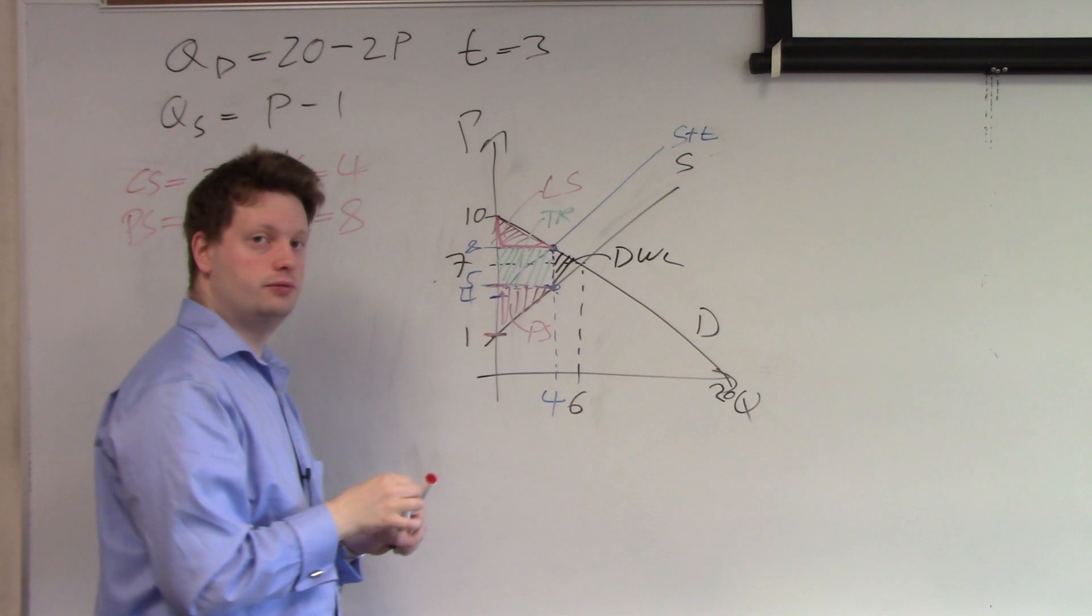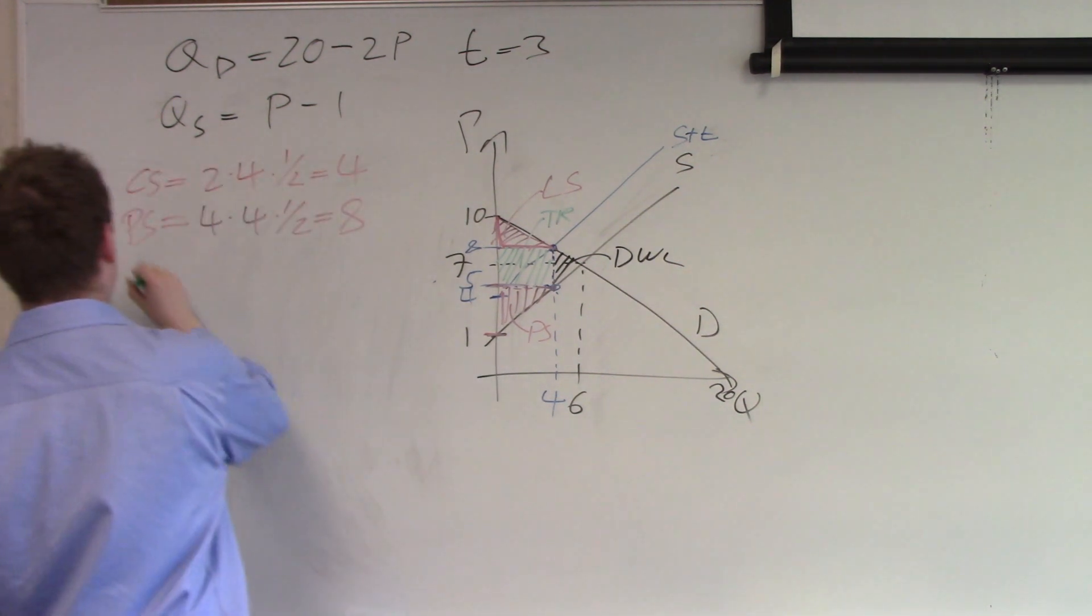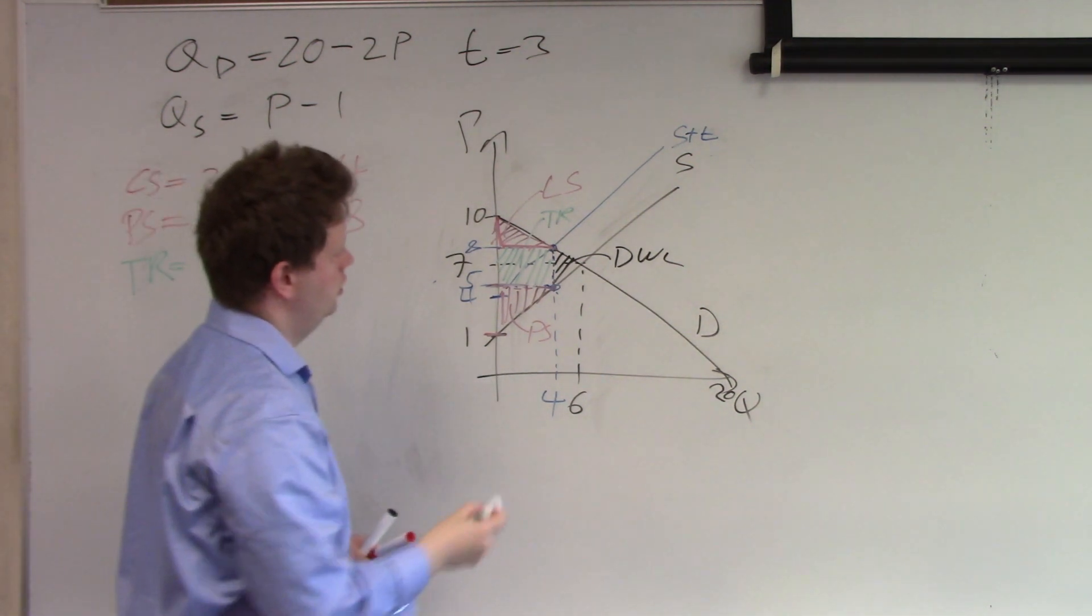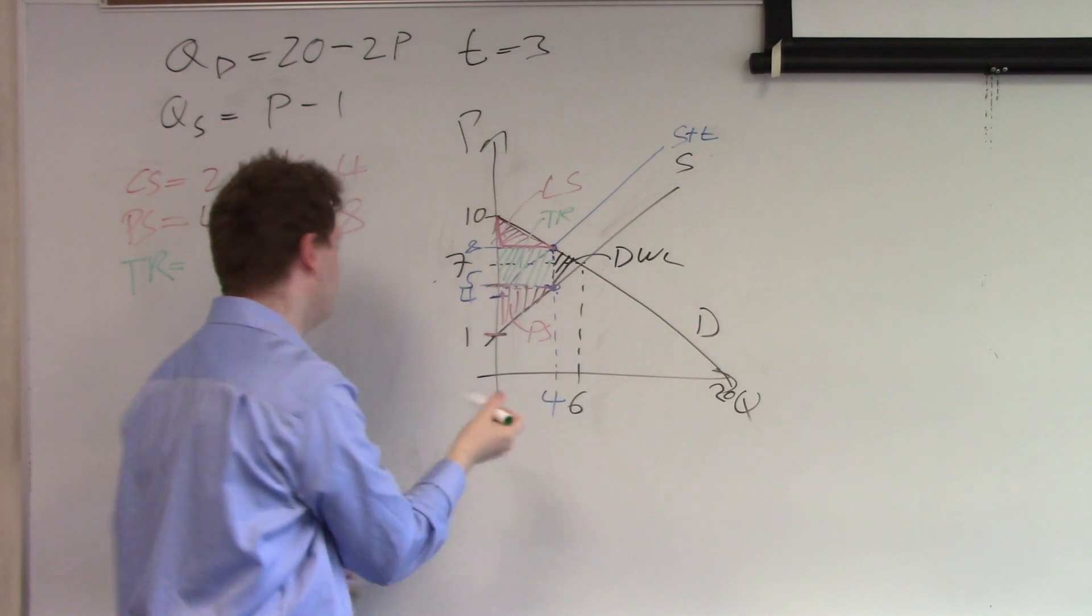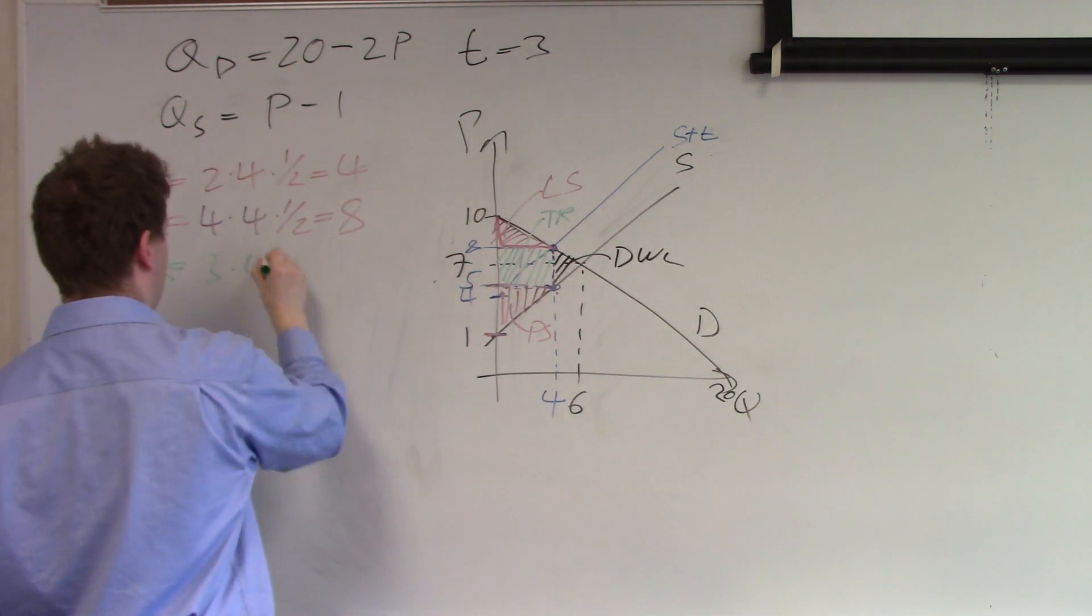Tax revenue. We have a tax of 3, we consume 4. 3 times 4 equals 12.